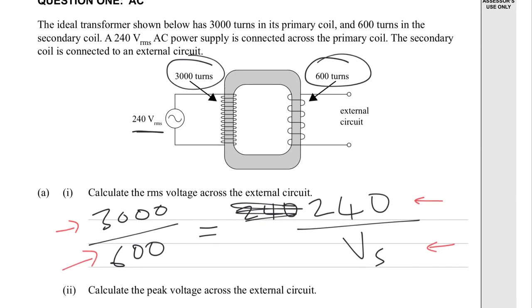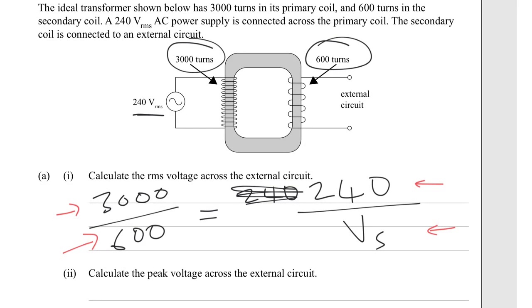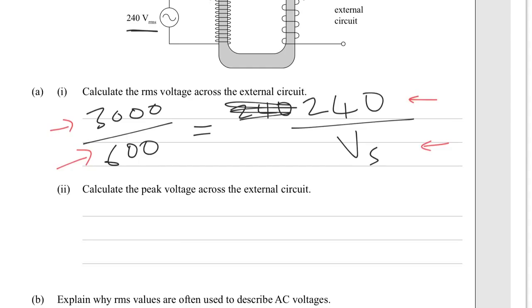Question, or part two, calculate the peak voltage across the external circuit. So, previously you might have noticed that we had the RMS value. To get the peak value, it's the square root of 2 times by the RMS value.